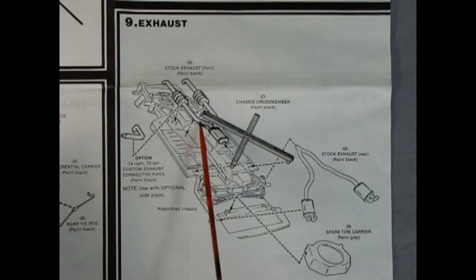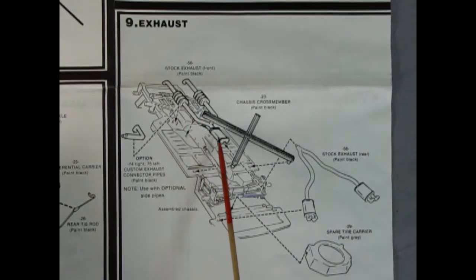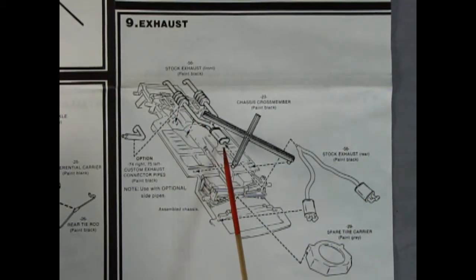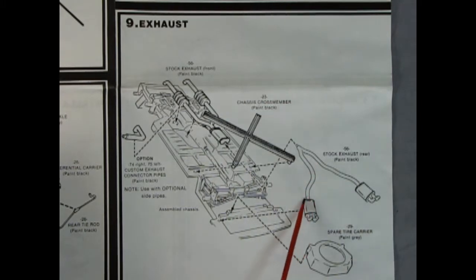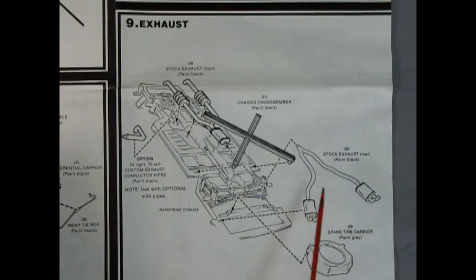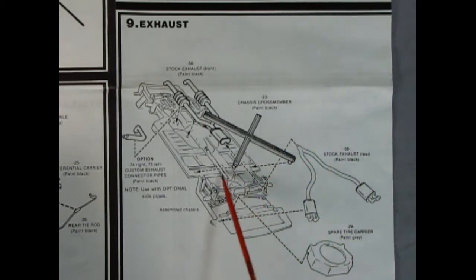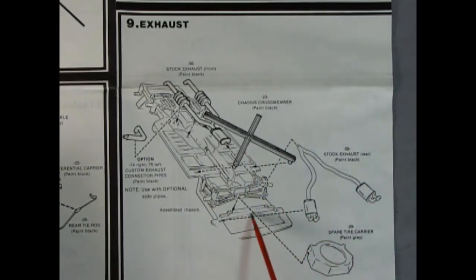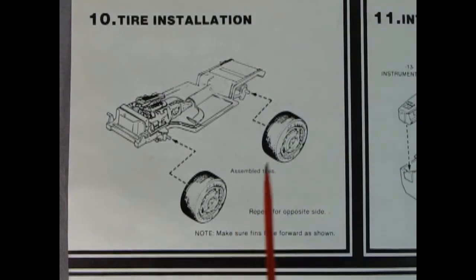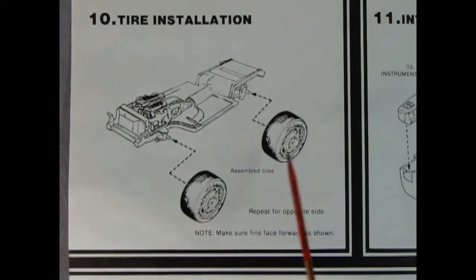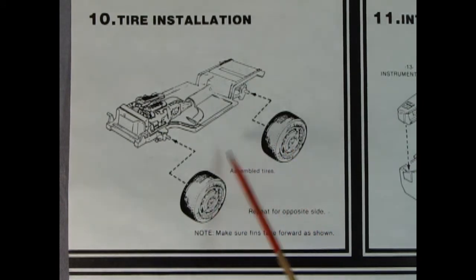Panel nine shows our exhaust system being put in place. Here we've got our stock factory exhaust pipes with the catalytic converter in the middle, and then our extensions off the back with our dual mufflers with the dual little pipes off the back. Then we've got our chassis cross member going on top of all of that and our spare tire carrier being glued onto the back.